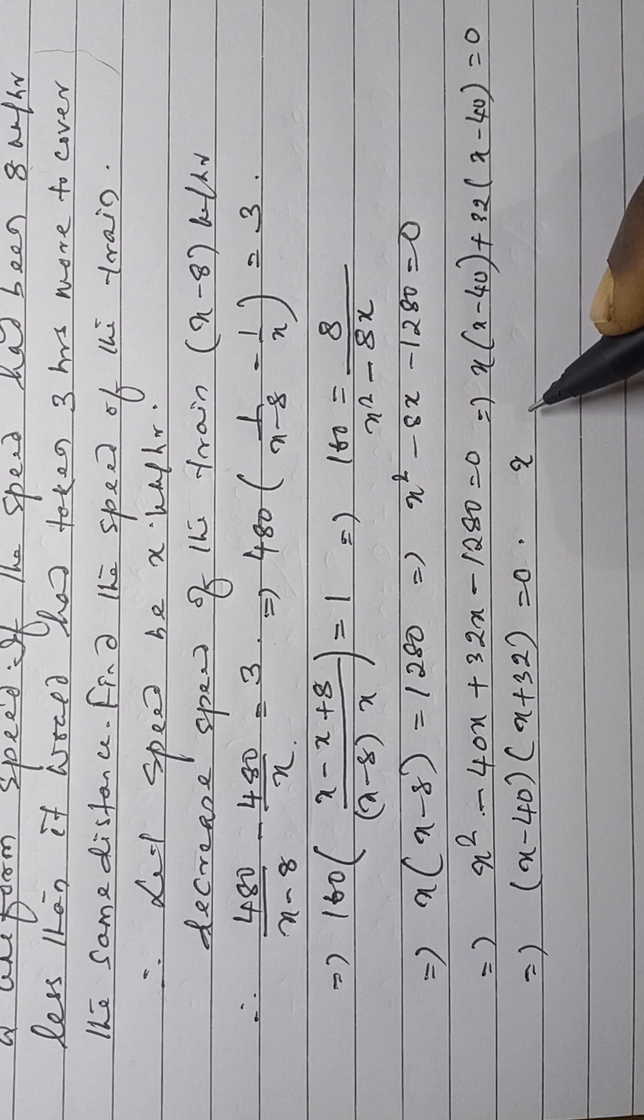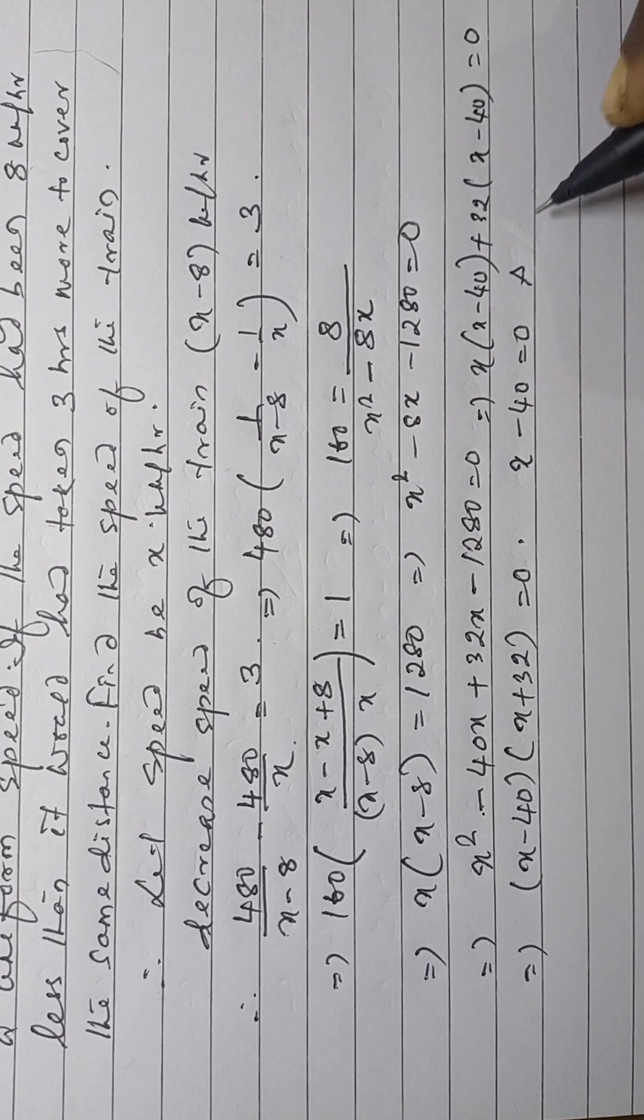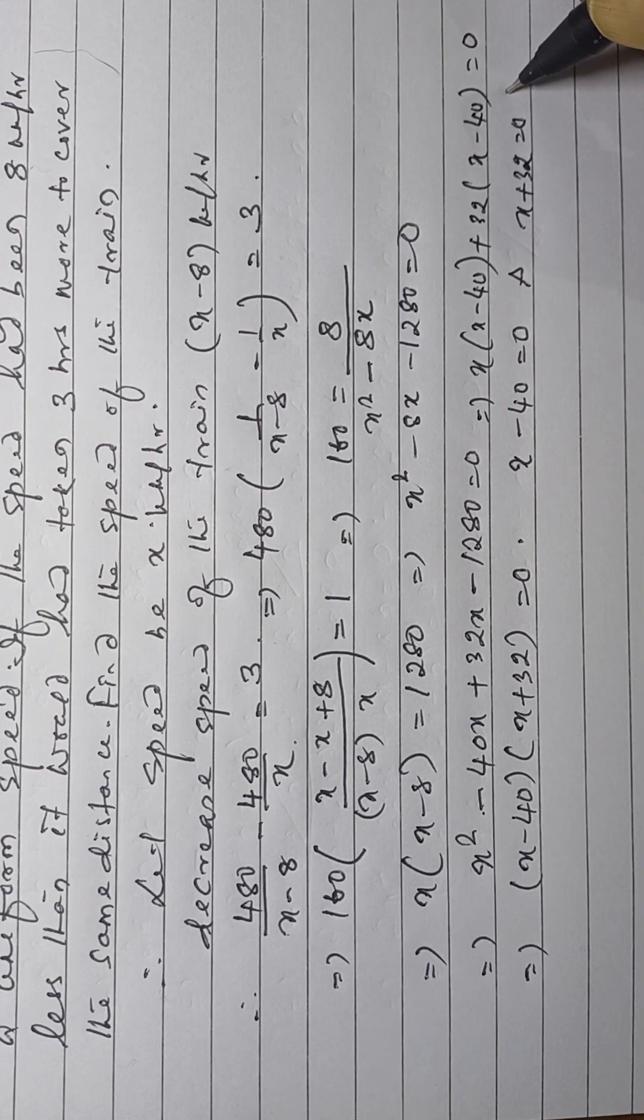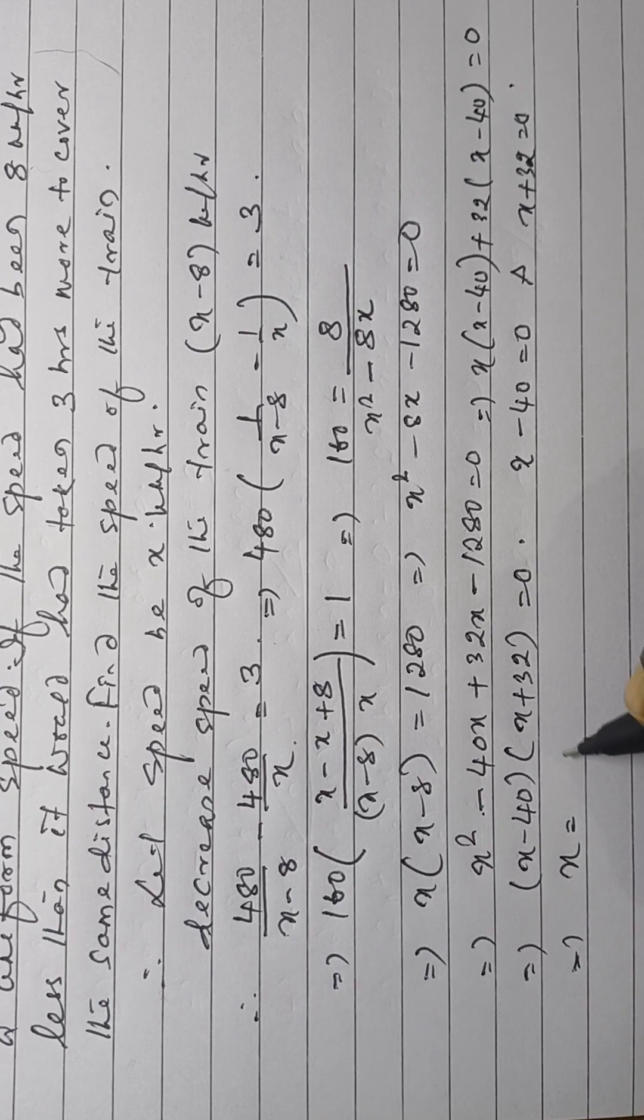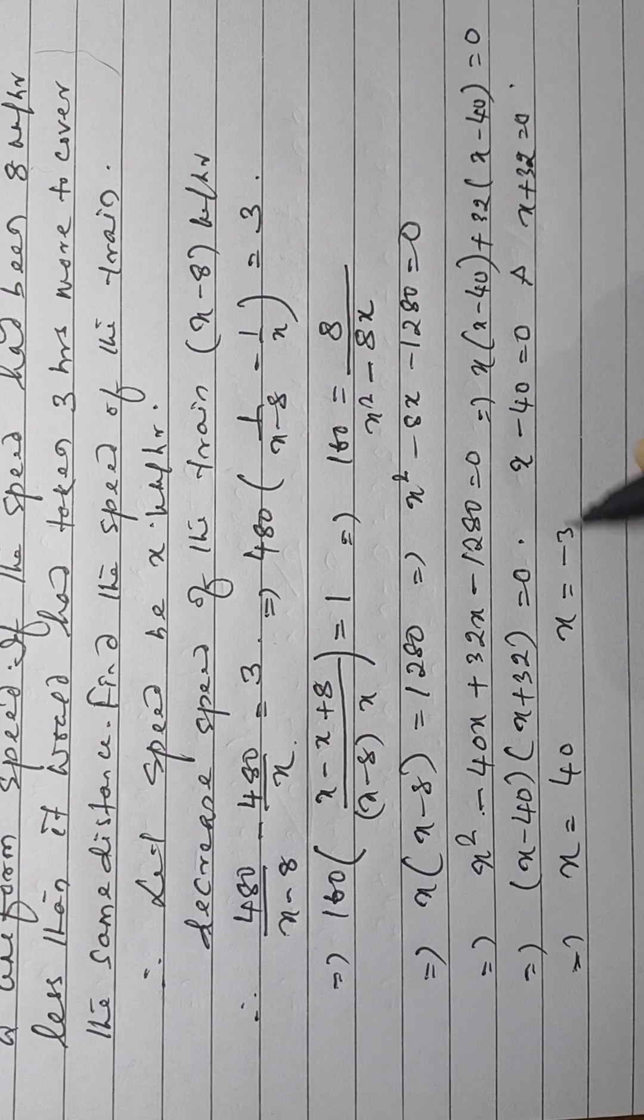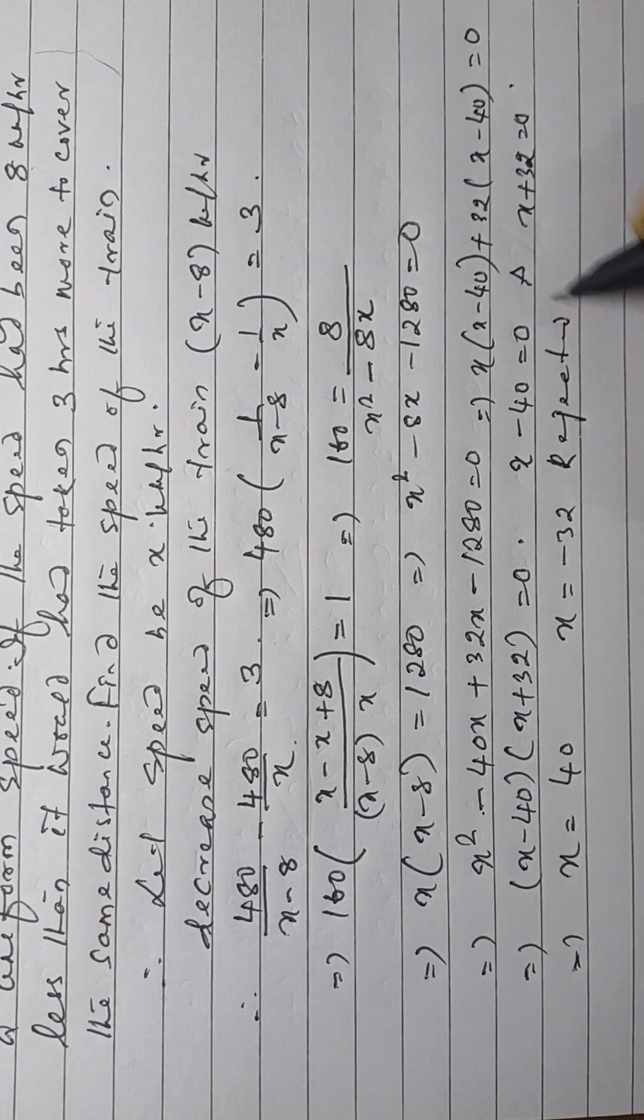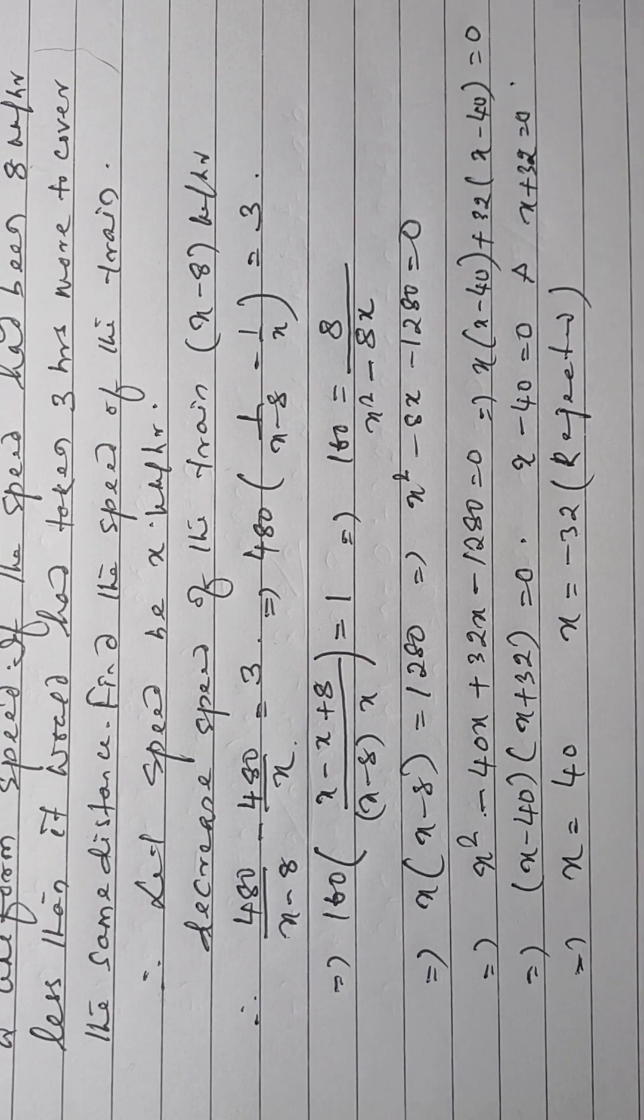Now, x minus 40 is equal to 0 and again x plus 32 is equal to 0. Now, x is equal to 40 and x is equal to minus 32, rejected. In practical figure, minus is not possible.